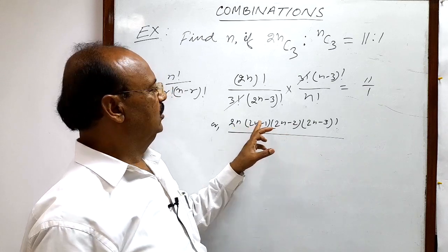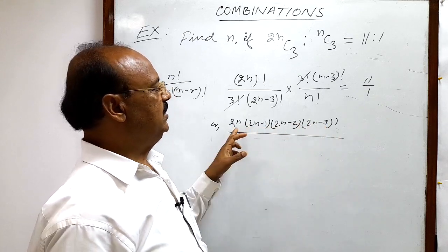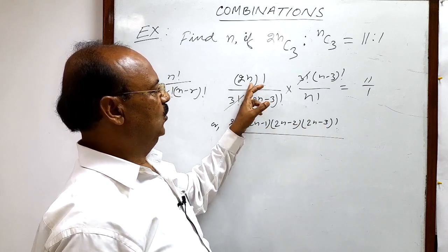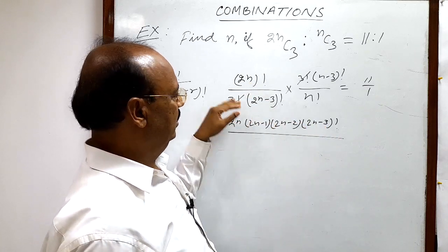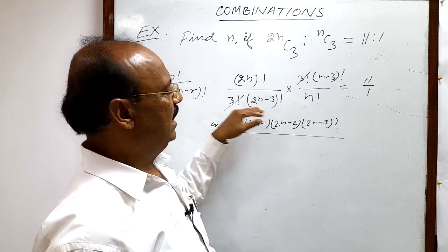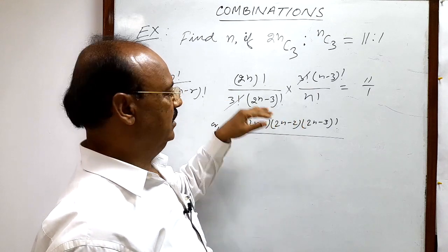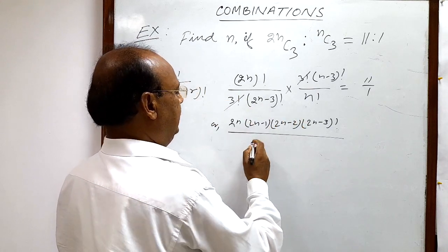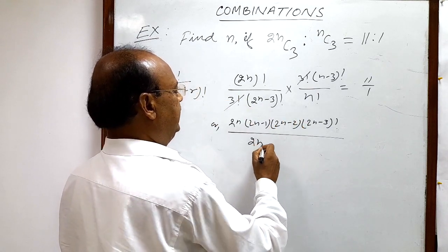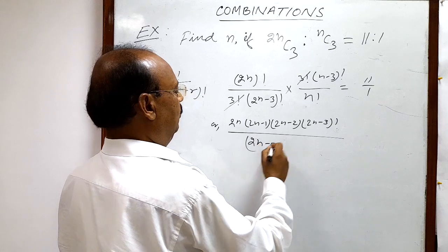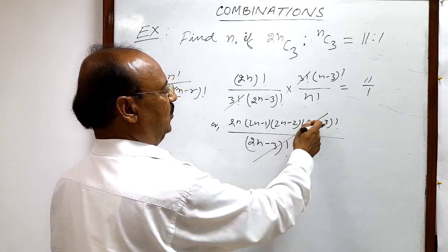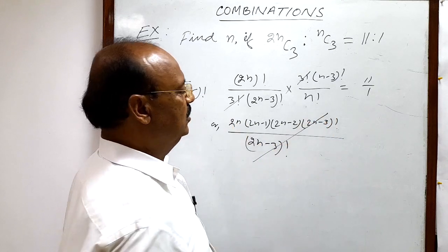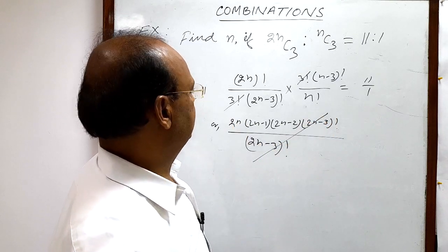This is nothing but 2n whole factorial, expanded in this way so that in the denominator the 2n minus 3 whole factorial gets cancelled out.